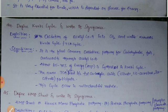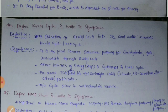Significance: It is the final common oxidative pathway for carbohydrates, fats, and amino acids through acetyl coenzyme A. Carbohydrates after oxidation are converted into pyruvate, then into acetyl CoA. Amino acids and fats can also be converted into acetyl CoA, so all can enter into the Krebs cycle. That is why it is the common oxidative pathway.